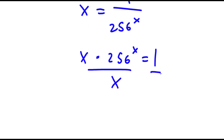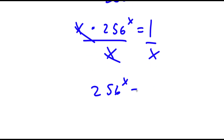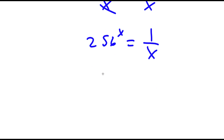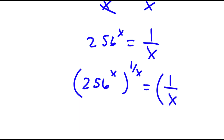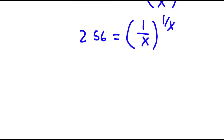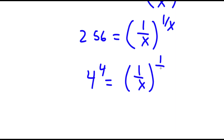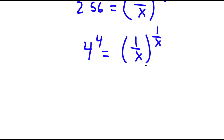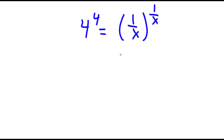Now I'm going to divide both sides by x. So now I have 256 to the power of negative x is equal to 1 over x. And now I can rewrite this as 256 to the power of negative x is equal to 1 over x to the power of 1 over x. And 256 is the same thing as 4 to the power of 4. So I have 4 to the power of 4 is equal to 1 over x to the power of 1 over x. Now, if I have something in the form a to the power of a is equal to b to the power of b, this means that a is equal to b.